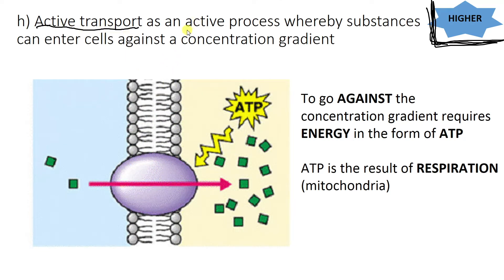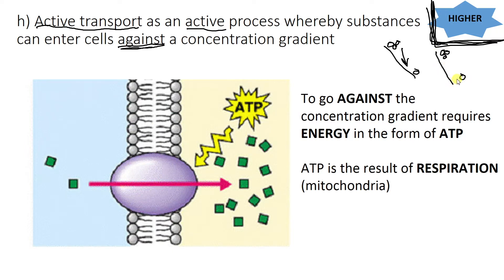This time it's an active process, so not passive anymore. This time we actually need energy because we're going against a concentration gradient. Before, with diffusion and osmosis, things go down the gradient — that's passive. With active transport, we're going against the concentration gradient, so we're pushing it up the hill.